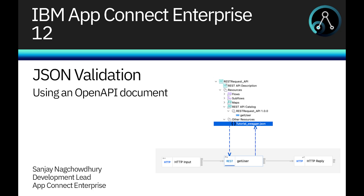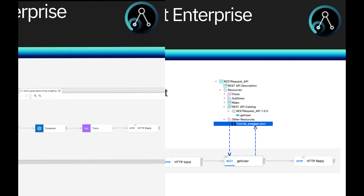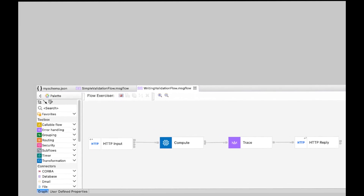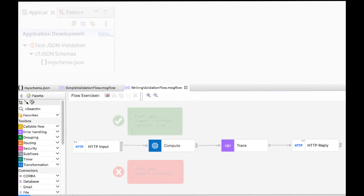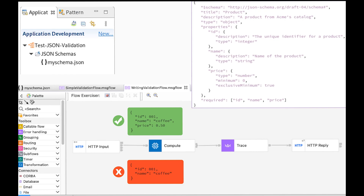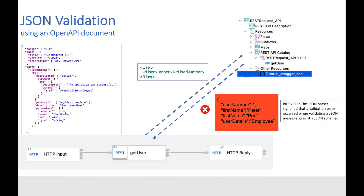Hi, I'm Sanjay Nagchaudhary, Development Lead for the IBM AppConnect Enterprise product. In a previous video, I demonstrated a new capability in version 12 to validate a JSON message using JSON Schema. In this video, I will demonstrate how you can configure the REST request node to validate a JSON response message from a back-end REST API.